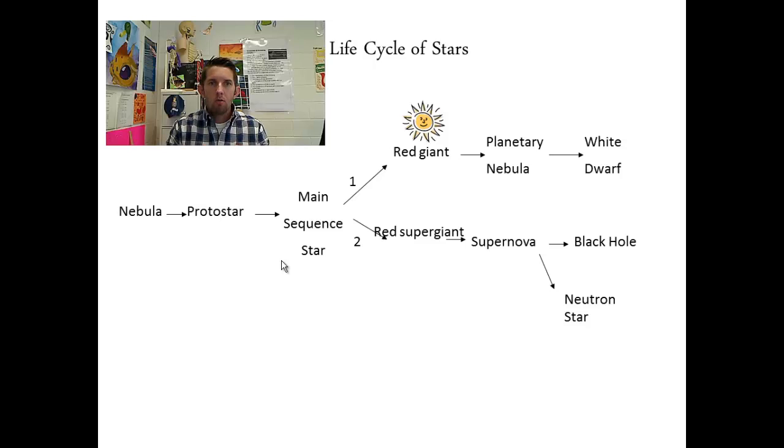They find an equilibrium, and they can have that equilibrium for billions of years if it's a smaller star. If it's like a medium-sized star like our sun, they can find that equilibrium for 10 billion years. If it's a huge star, it might only be millions of years.